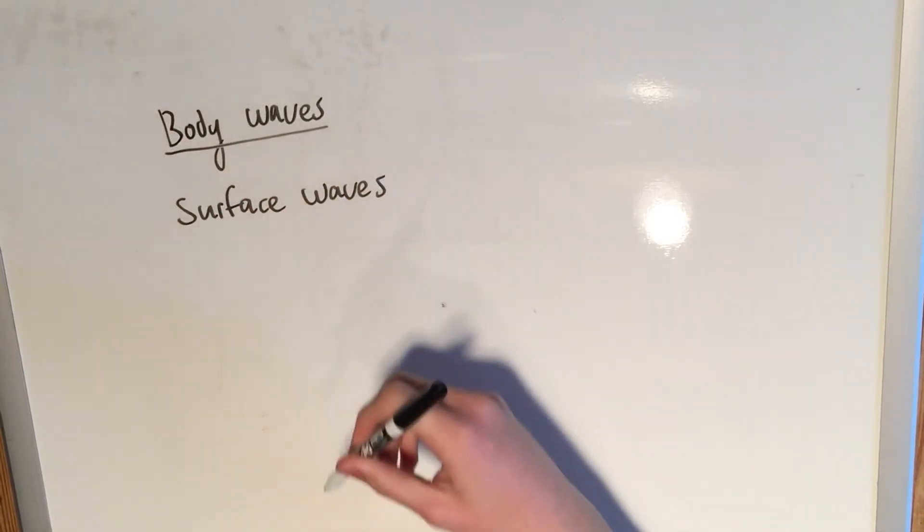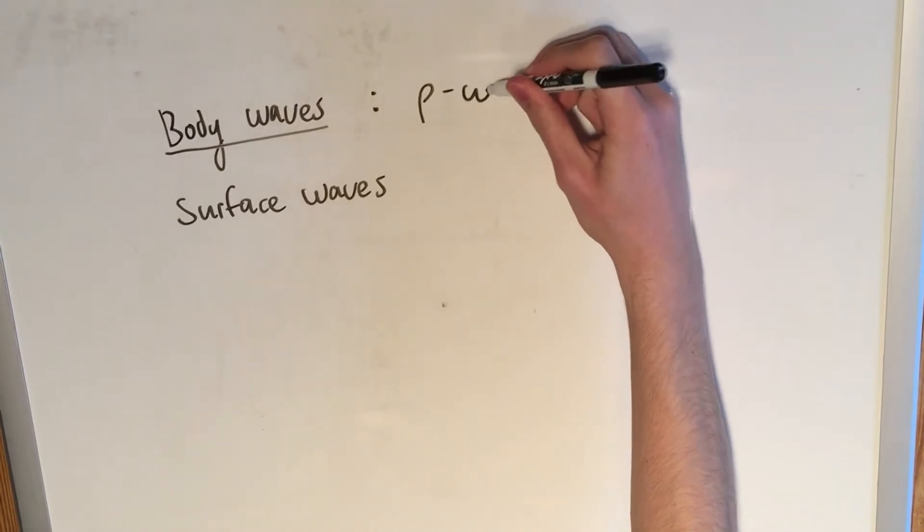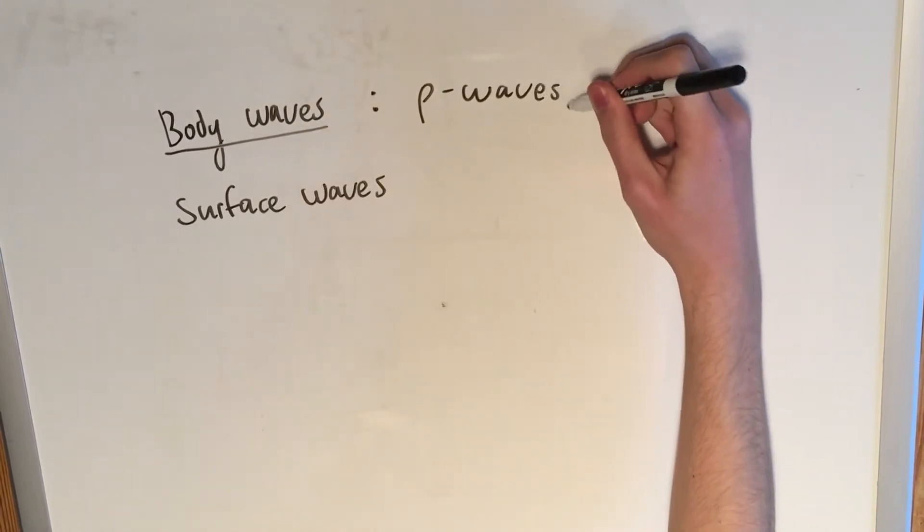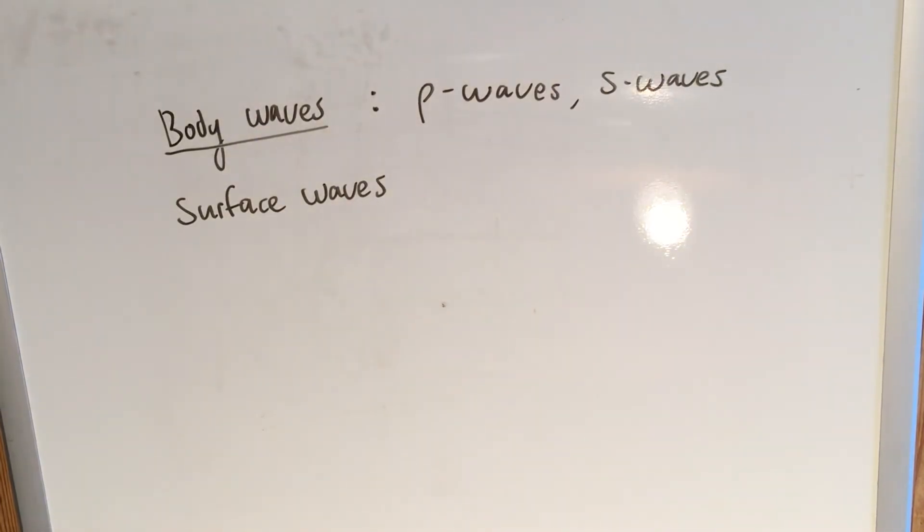So body waves can be further broken down into P waves and S waves. And here I'll just be discussing some of the key differences between a P wave and an S wave.